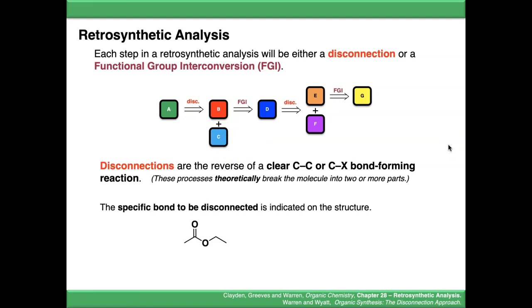When you're drawing this on a retrosynthetic diagram, the specific bond to be disconnected is indicated on the structure. You usually use these wiggly lines. We're saying we're disconnecting this bond here. By putting in a retrosynthesis arrow, we're breaking it down to the starting materials.